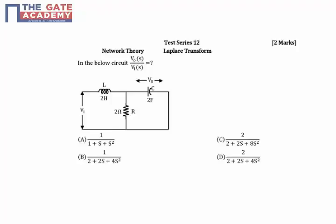In this question we need to determine the ratio of V0 by Vi. V0 is the voltage across this capacitor. It is also the voltage across this resistor, or in other words, it is the voltage across the parallel combination of the resistor and the capacitor.